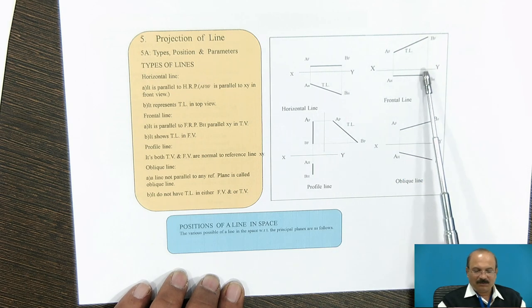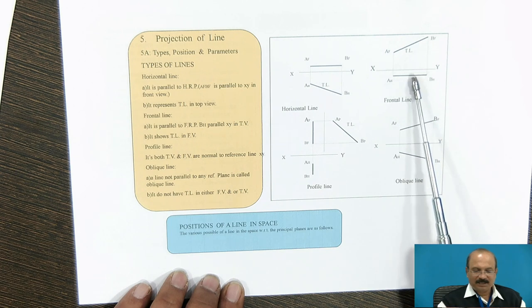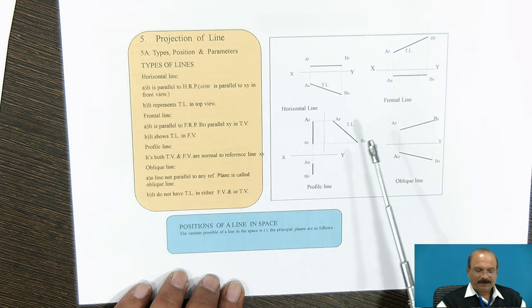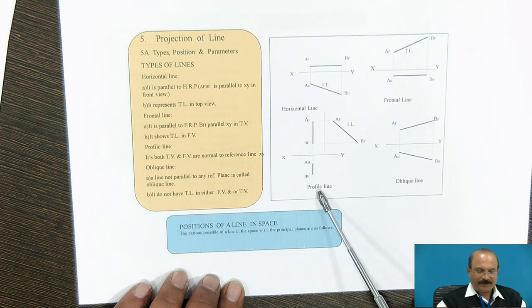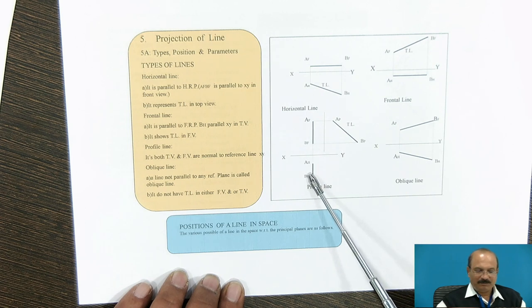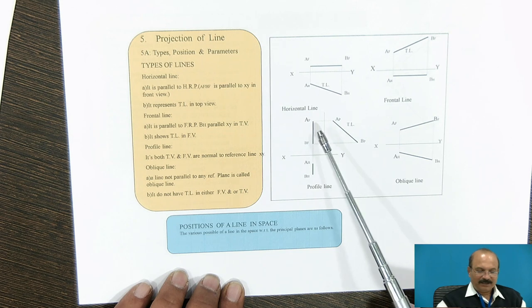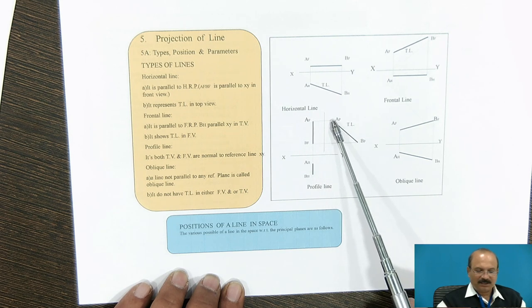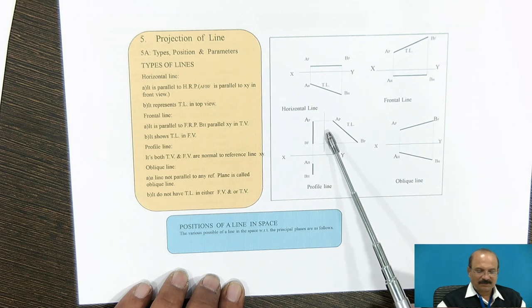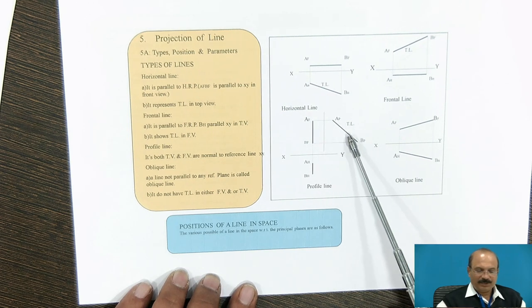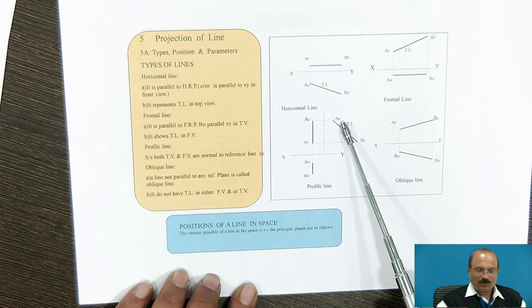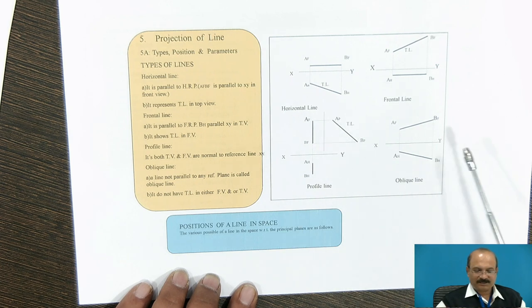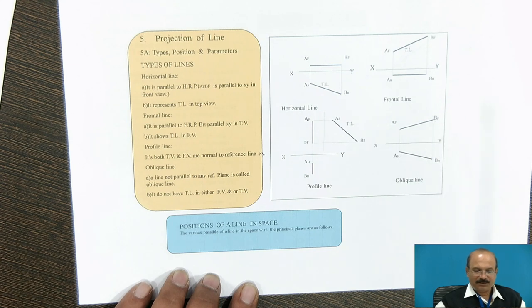Frontal line means it is parallel with the vertical plane, below the XY line — meaning in the other view we get this line as a true length. The next line is the profile line. It is perpendicular to both HP as well as VP. You bring the projector in the horizontal direction and get this as a true length, because it is at the same distance from the reference plane. The oblique line is inclined to both HP and VP.